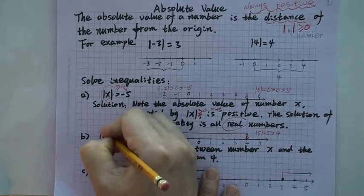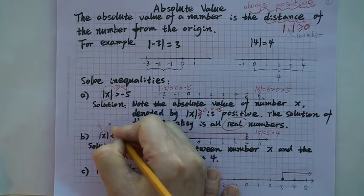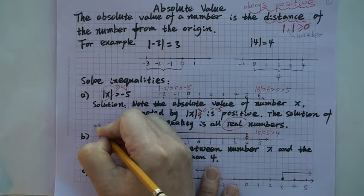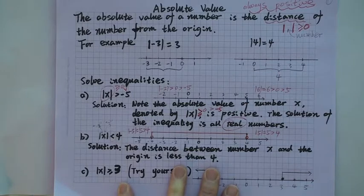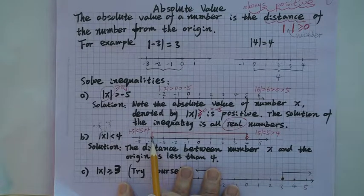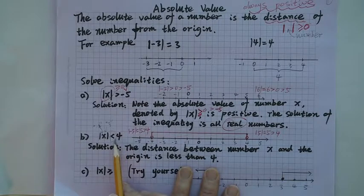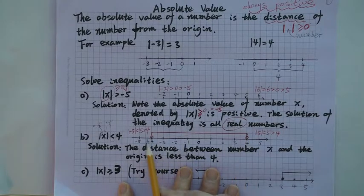If you plug in negative 2, you get positive 2 for the absolute value — 2 is less than 4, so it works. If you plug in 3, the absolute value is 3, which is less than 4, so it works. All the numbers in between negative 4 and positive 4 are going to work. Remember, if you plug in negative 4 or positive 4, you get positive 4, which is equal to 4 — not less than 4 — so those two boundary points are not included because they do not satisfy the inequality.